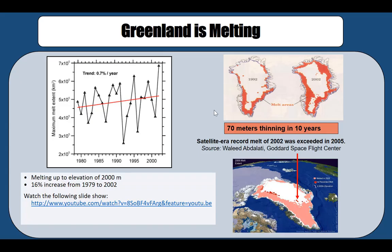On the other hand, the ice over Greenland is located on land, not on the ocean — so it's a different story. As this ice melts, the water flows into the ocean, causing sea level rise. Ice over Greenland therefore leads to sea level rise, while ice on the sea does not. The extent of melt area over Greenland expanded from 1992 to 2002, and by 2005 more and more inland areas began melting.